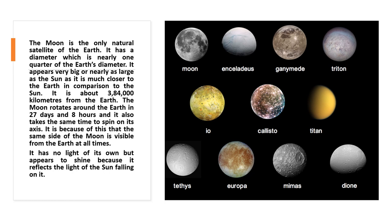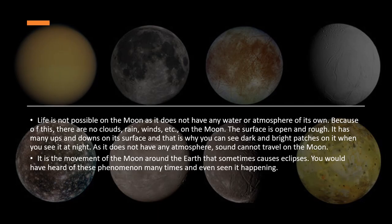Moon or satellite does not have its own light. They get heat and light from the stars. The earth's moon that we see seems to be bright and lit up — that is because of the light of the sun. There is no life on the moon.